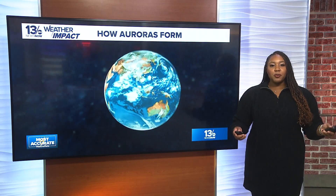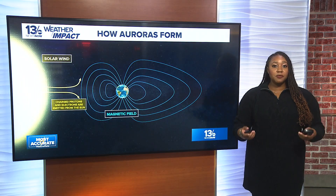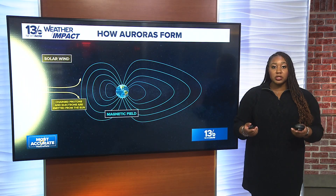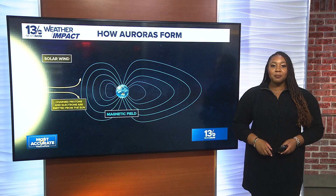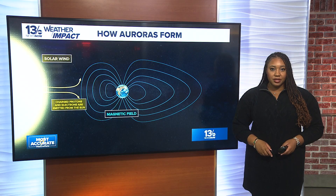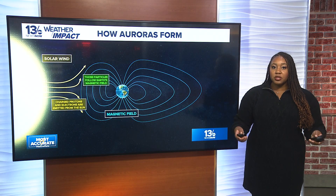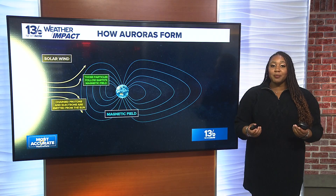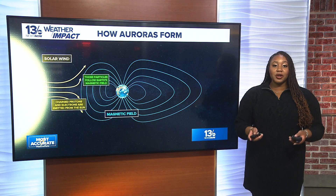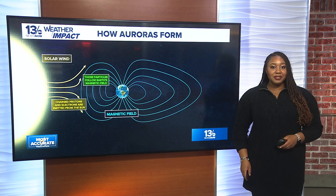Charged protons and electrons are emitted from the sun during solar flares and coronal mass ejections. Solar flares are explosions on the Earth's surface. Coronal mass ejections are gas bubbles expelled by the sun.